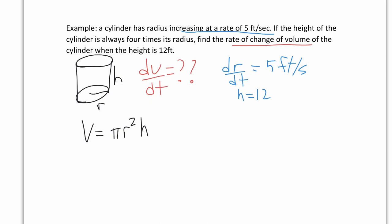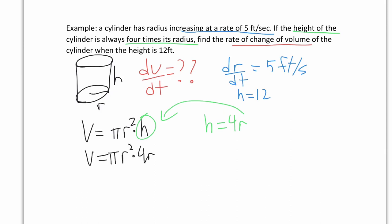Normally we would take the derivative right away, but unfortunately we have two variables being multiplied — r² and h — which means we'd need the product rule, and it's going to get complicated. Instead, it would be nice if we could get rid of one variable. We can, because there's a piece of information we haven't used: the height is always 4 times its radius, so h = 4r. Substituting gives V = πr²(4r), or V = 4πr³.